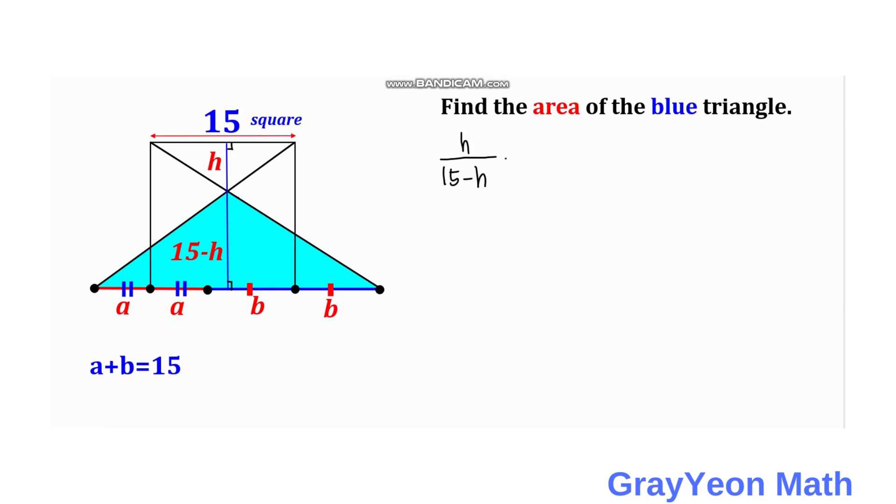It is equal to the base of this triangle at the top, and that is 15, over the base of this larger triangle, which is actually equal to 2A plus 2B.